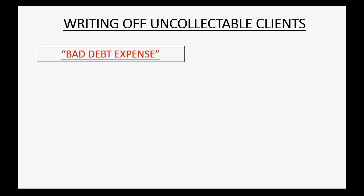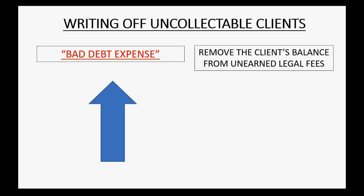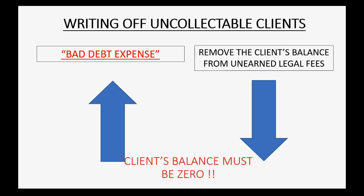So how does writing off uncollectible clients affect the chart of accounts? We have a new expense that represents the money we lose when clients become insolvent. This expense increases at the moment we declare that we will not get the money that is owed to us and we record it in our QuickBooks Online records. The client's balance also has to be removed from the unearned legal fees account — if it's a positive number, it goes down to zero; if it's a negative number, it becomes more negative. We also have to make sure in the client's records that the client has a zero balance when we finish.